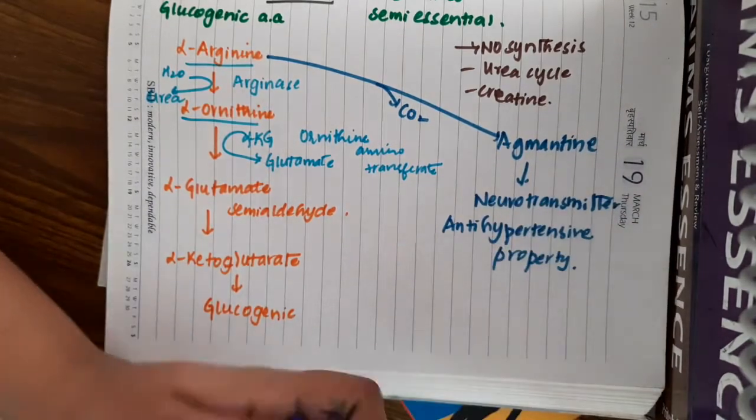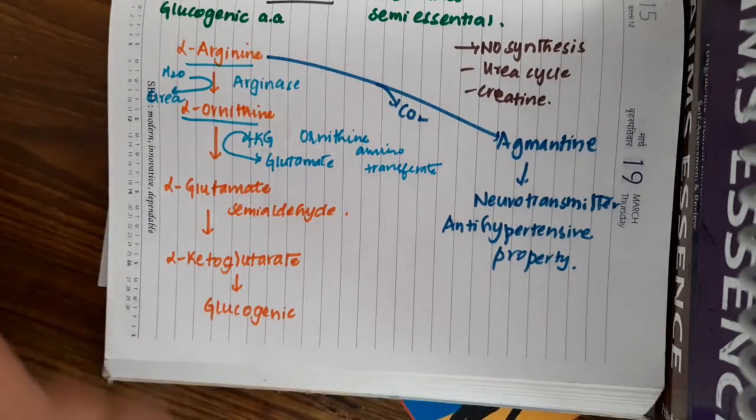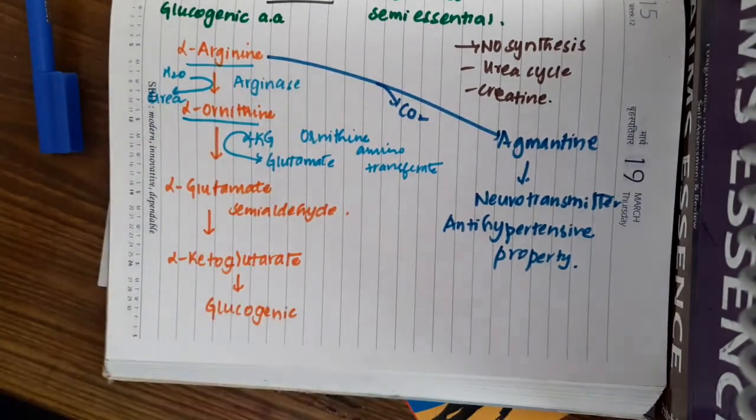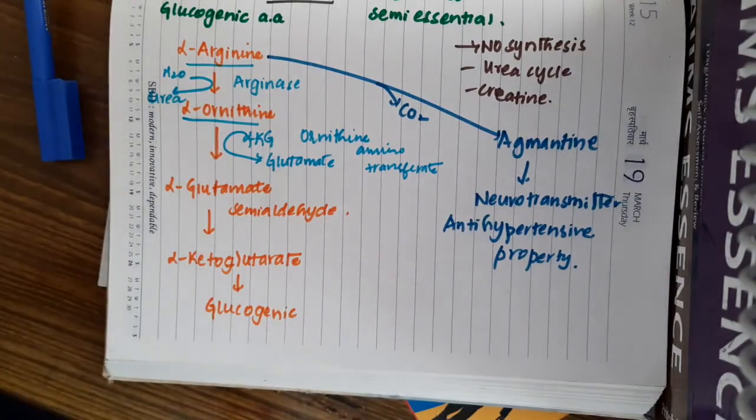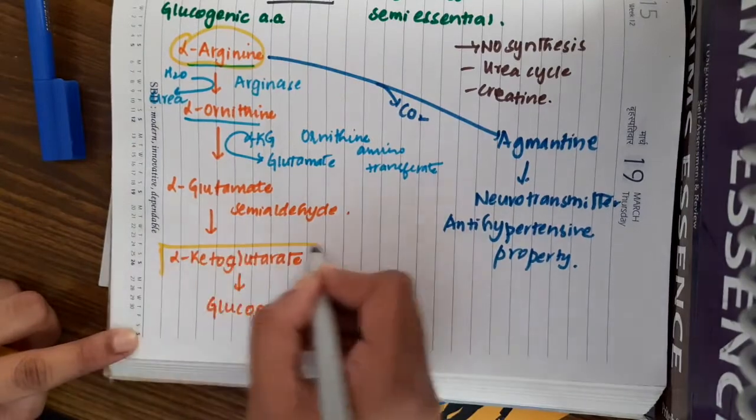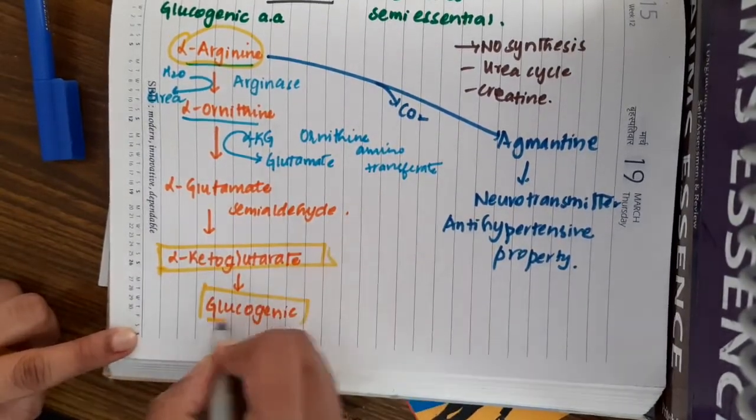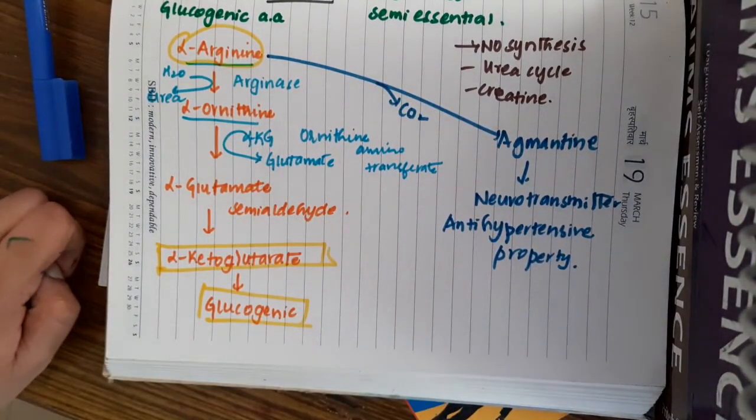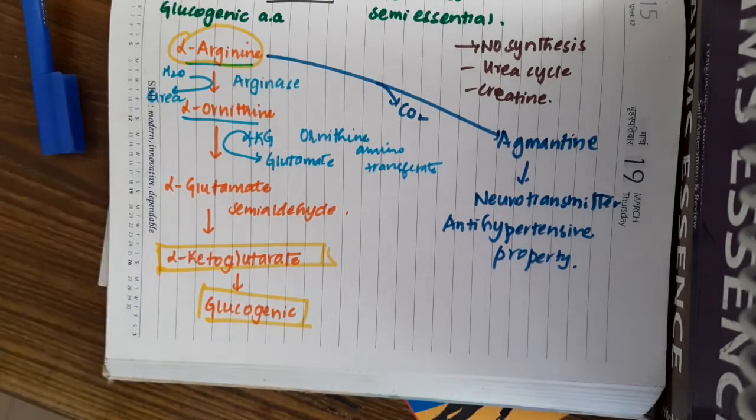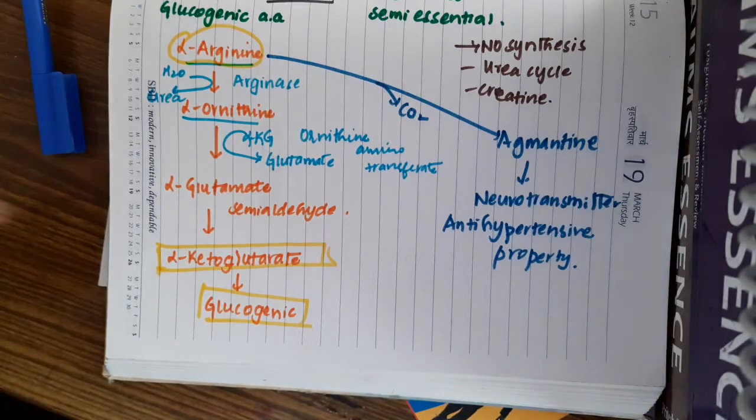This is about the amino acid arginine. Even if you don't remember this pathway, that's completely fine. What you have to remember is this L-arginine at the end produces alpha-ketoglutarate which enters the Krebs cycle and also enters the gluconeogenesis.